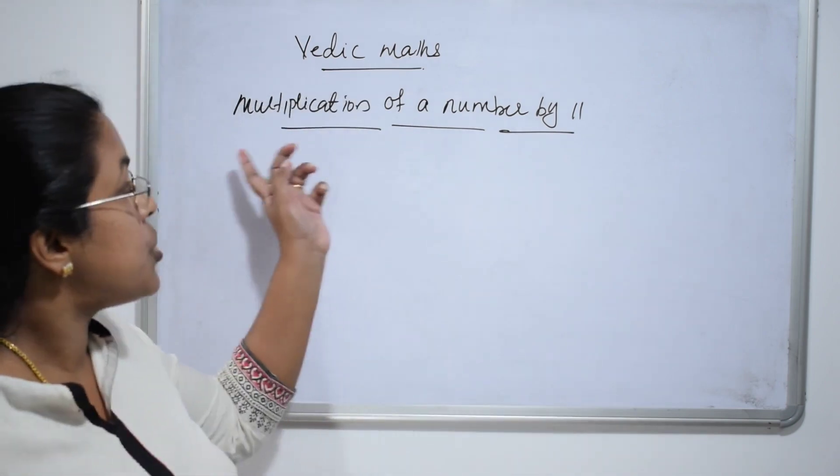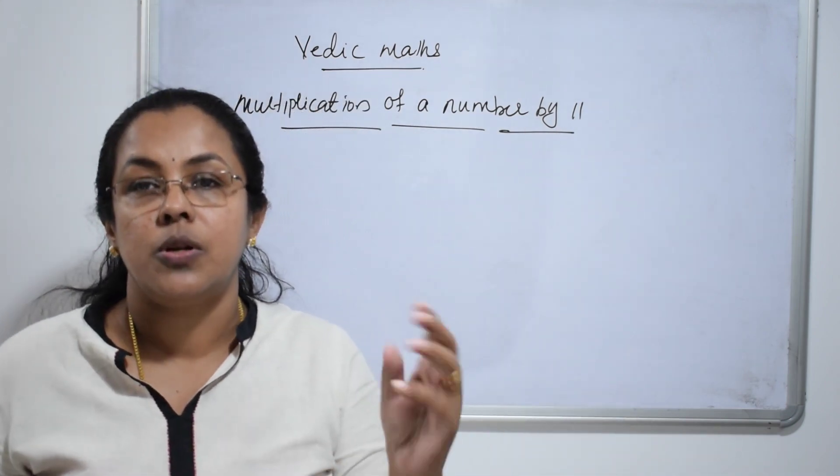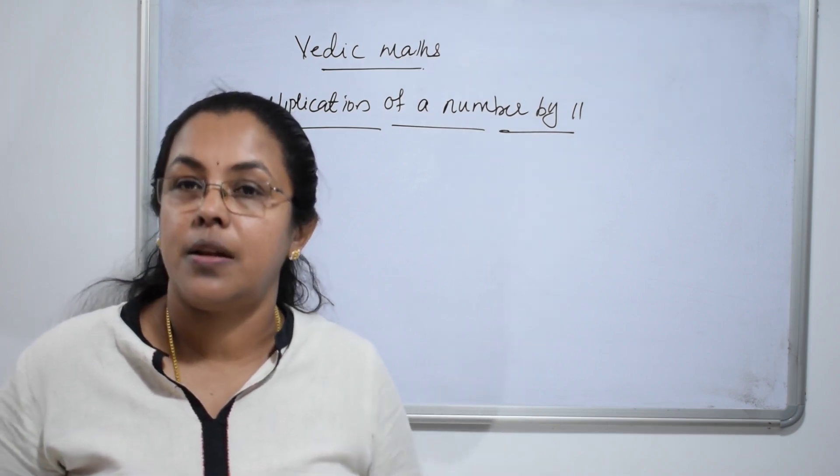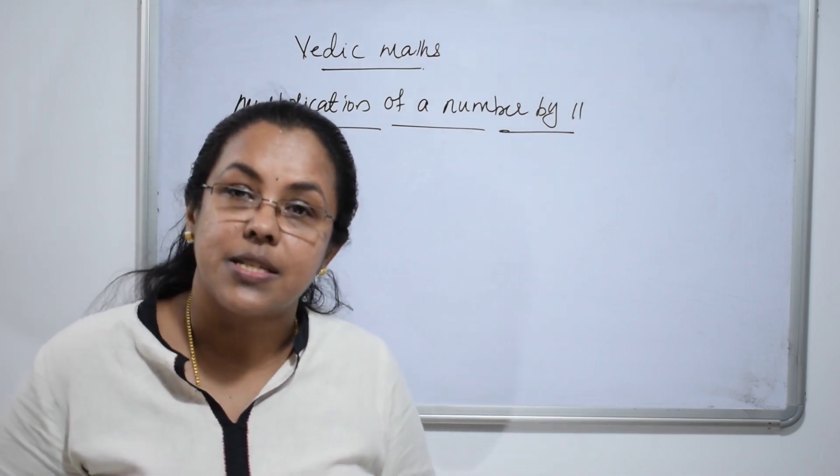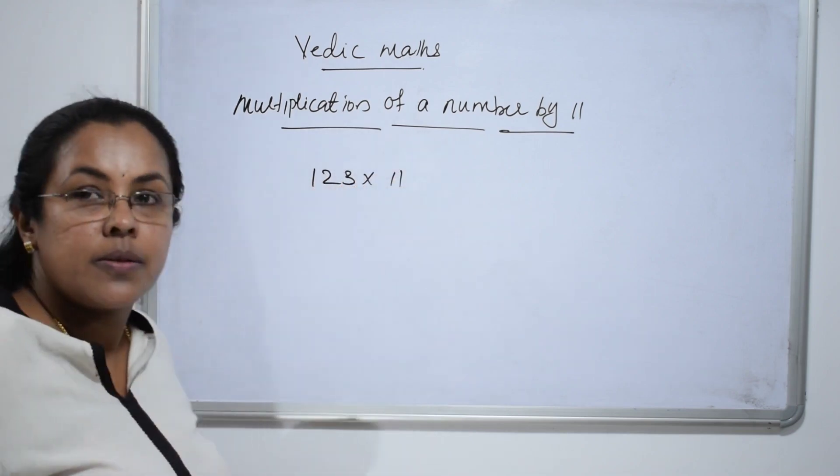First, multiplication of a number by 11. I am going to multiply two numbers then I will explain how quick it is. 123 into 11.